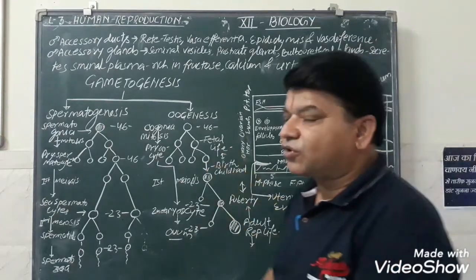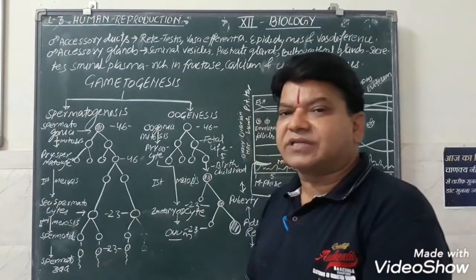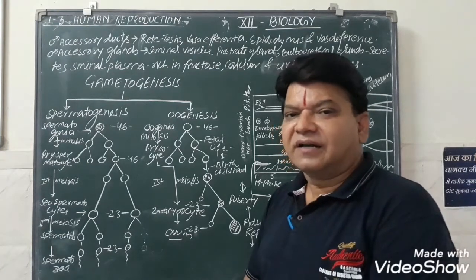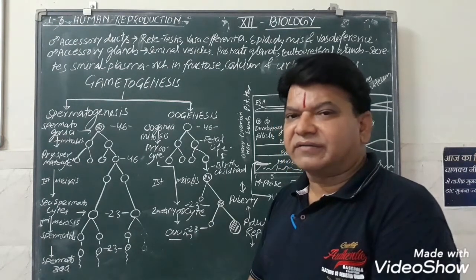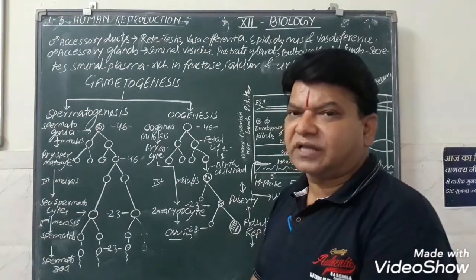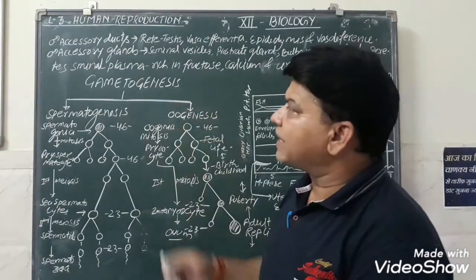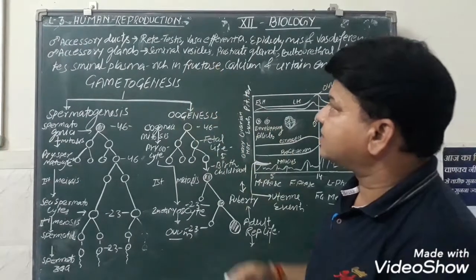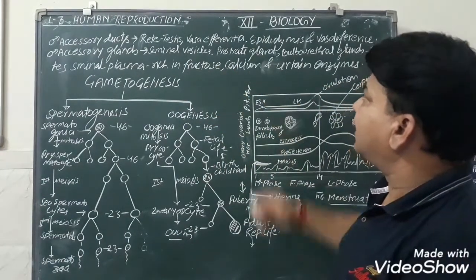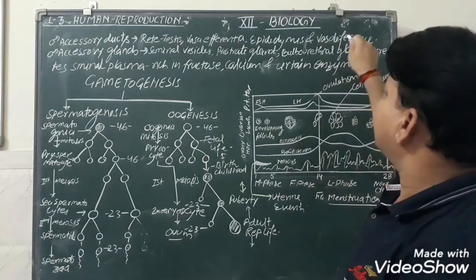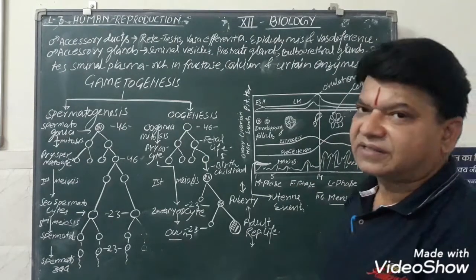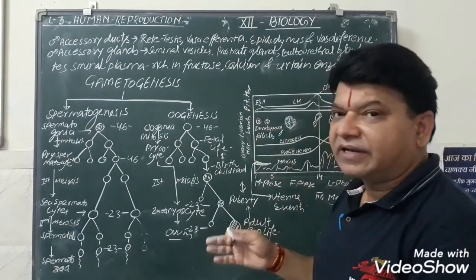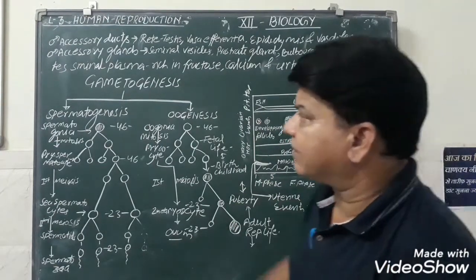As you know, the male reproductive system consists of the testes, which are the primary or important sex organs in human males. The accessory ducts include rete testis, vasa efferentia, epididymis, and vas deferens. These accessory ducts help in the process of reproduction.